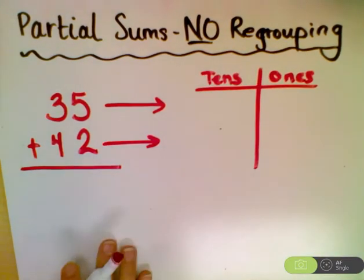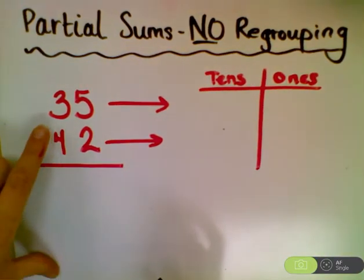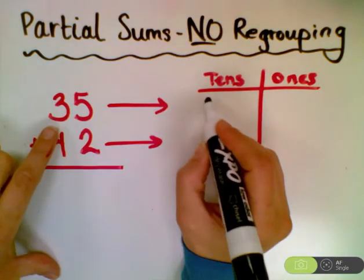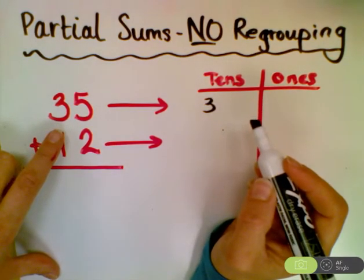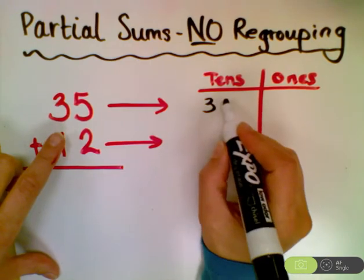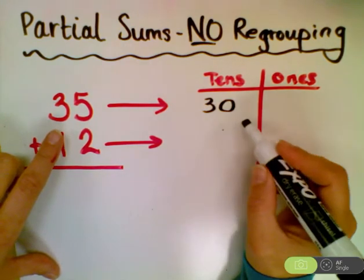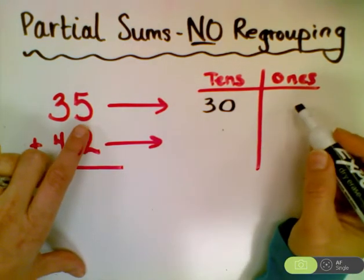Then we ask ourself, how many tens are in 35? Well, there's three, because there's three in the 10 spot. But three tens, 10 plus 10 plus 10, actually equals 30. So the value is 30. How many in the one spot? Well, there's five.